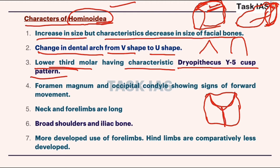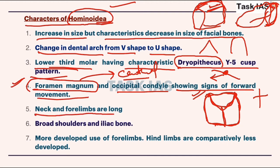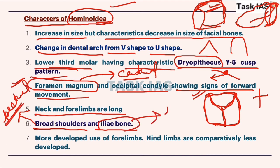The third lower molar has a characteristic Dryopithecus Y-5 cusp pattern. If we observe the structure of a molar, some kind of Y feature is observed where different divisions of the tooth are present. In humans a plus-sign pattern is observed in our teeth, while this Y-shaped cusp is a characteristic feature of Dryopithecus. The foramen magnum is now more central, shifted from its lateral position forward, and the occipital condyle shows signs of forward movement, which is related to bipedalism.